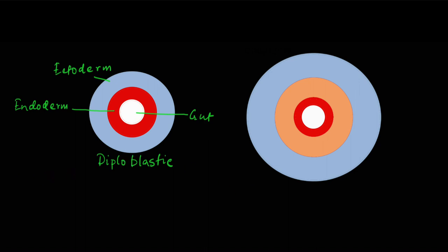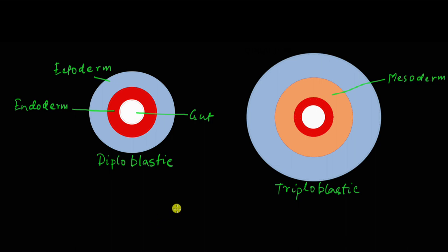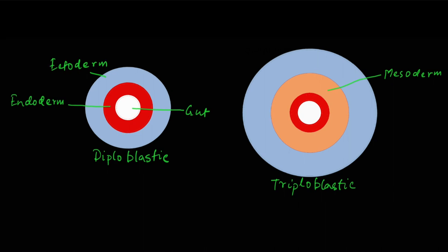Animals higher than Cnidaria and Ctenophora are triploblastic — meaning they had three tissue layers when they were embryos. The outer layer is the ectoderm, the inner layer is the endoderm, and there is an additional tissue layer in the middle called the mesoderm (meso means middle). Triploblastic animals are also bilaterally symmetrical. Triploblastic animals have a few varieties, and all animals more advanced than Cnidaria and Ctenophora fall into this category.